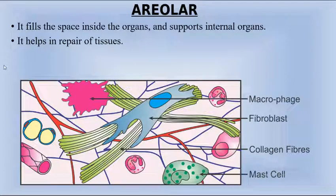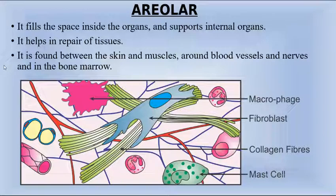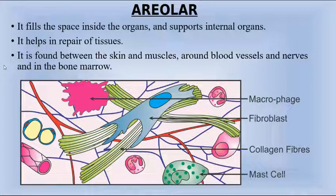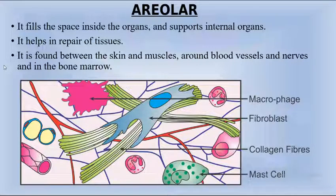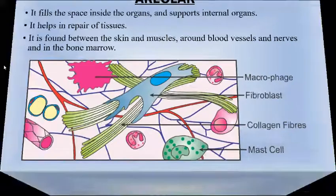Areolar tissue also helps in the repair of tissues. It is found between the skin and muscles, around blood vessels, and in the bone marrow. When you see your skin, the upper layer is the skin, and below that are muscles — areolar tissue is present between them.